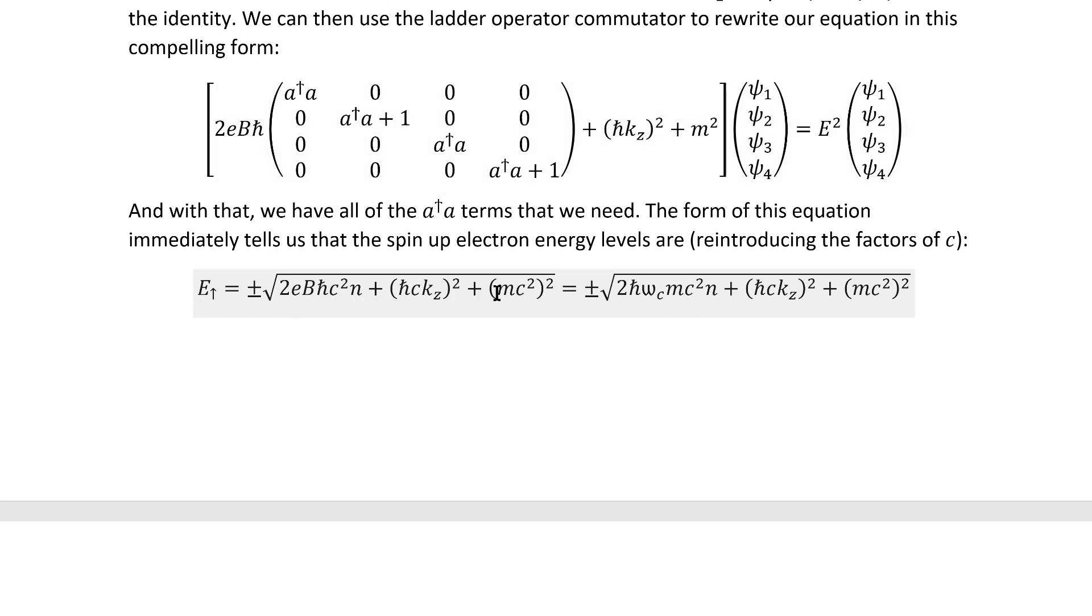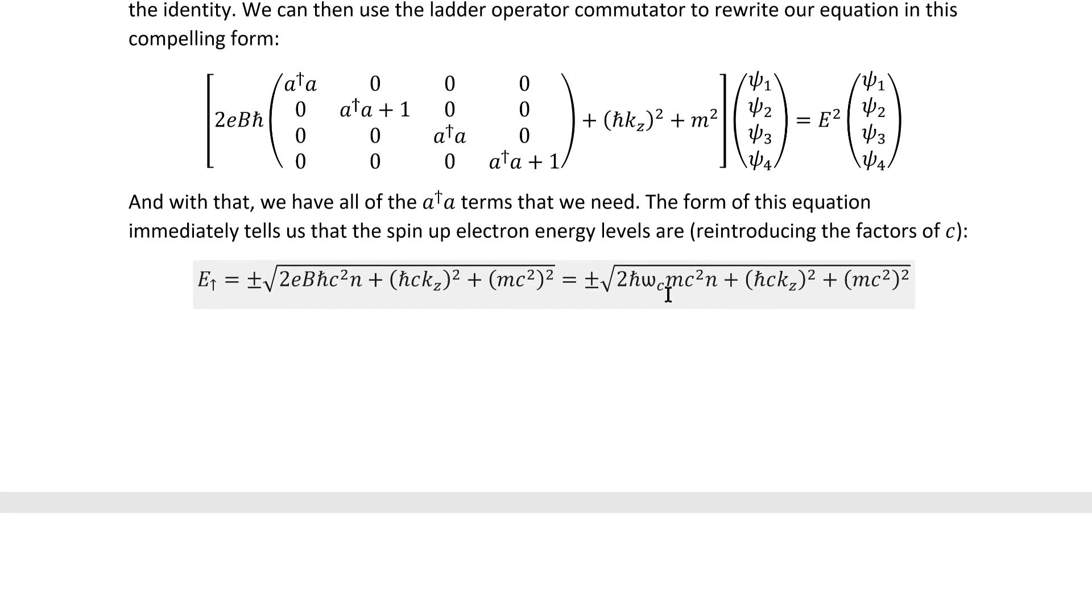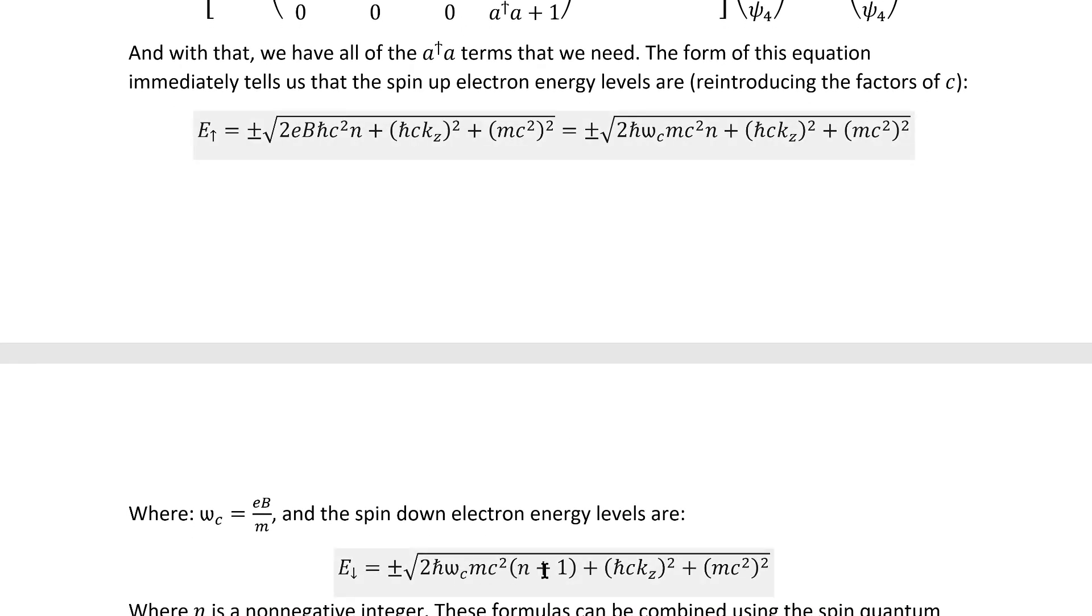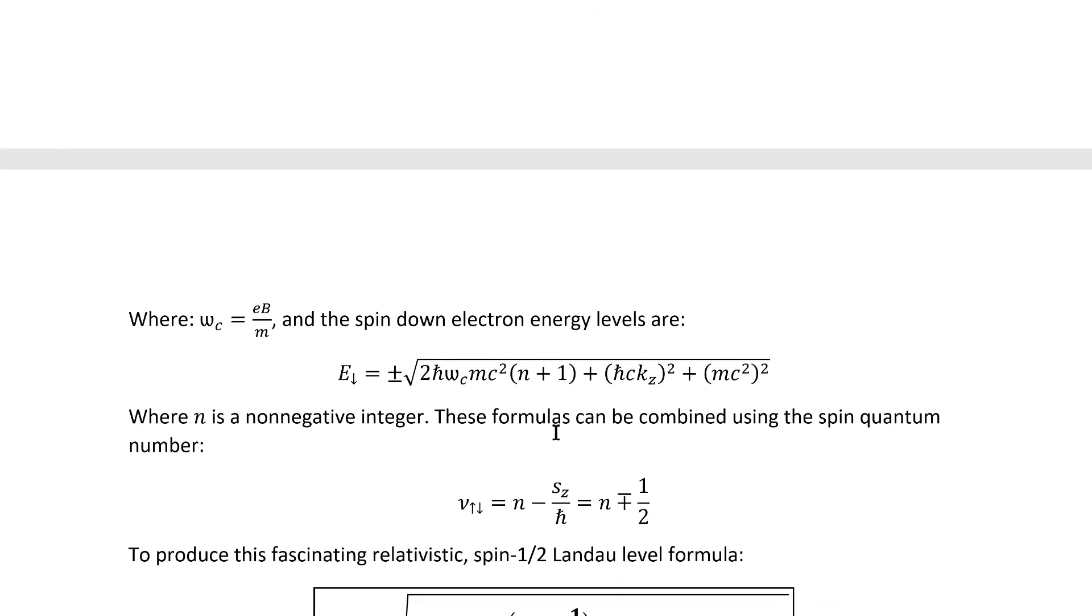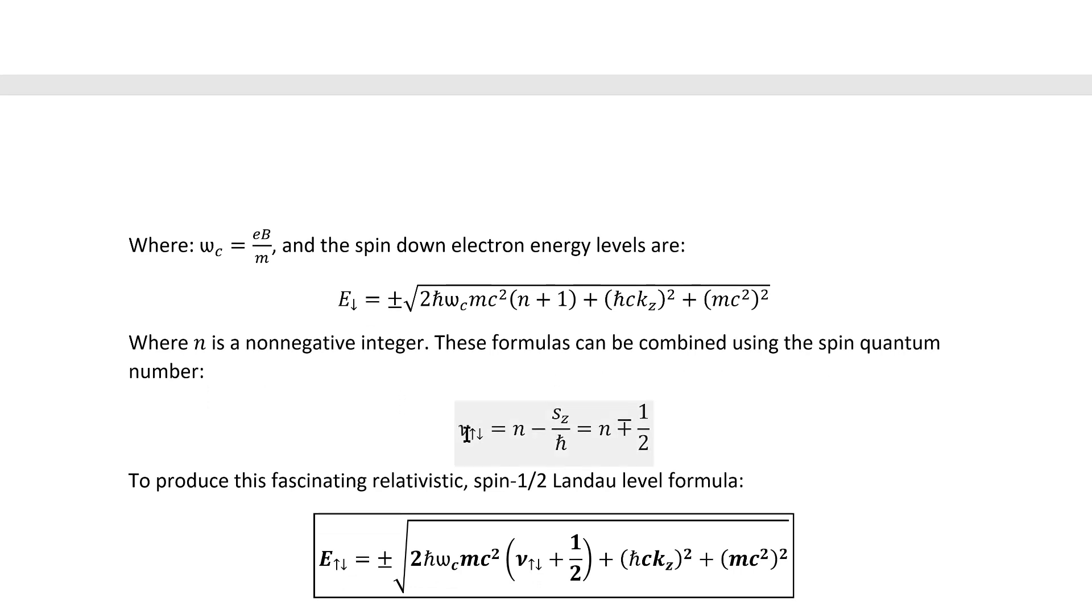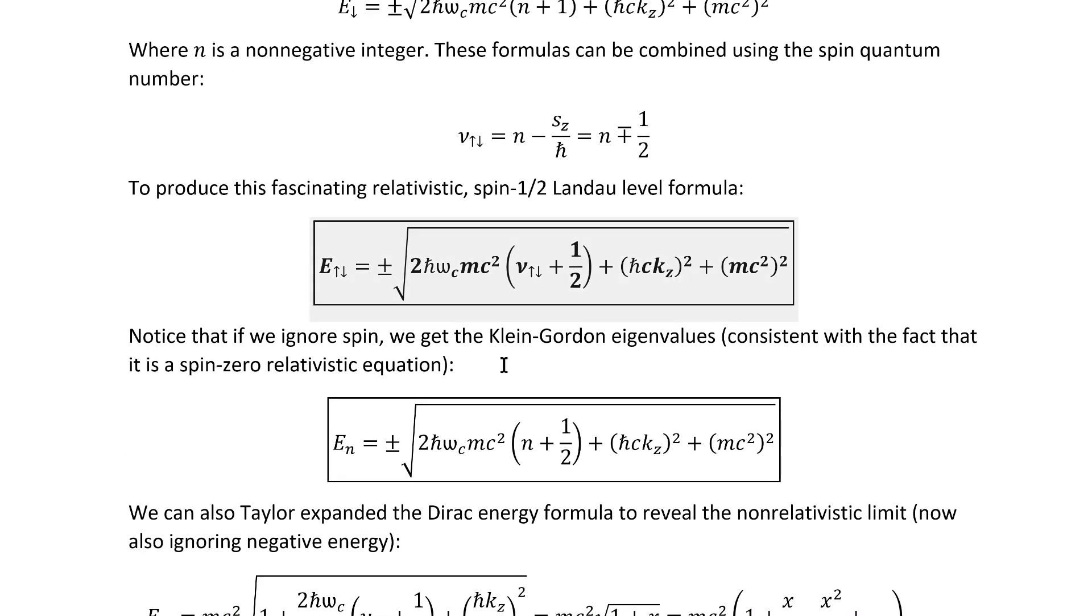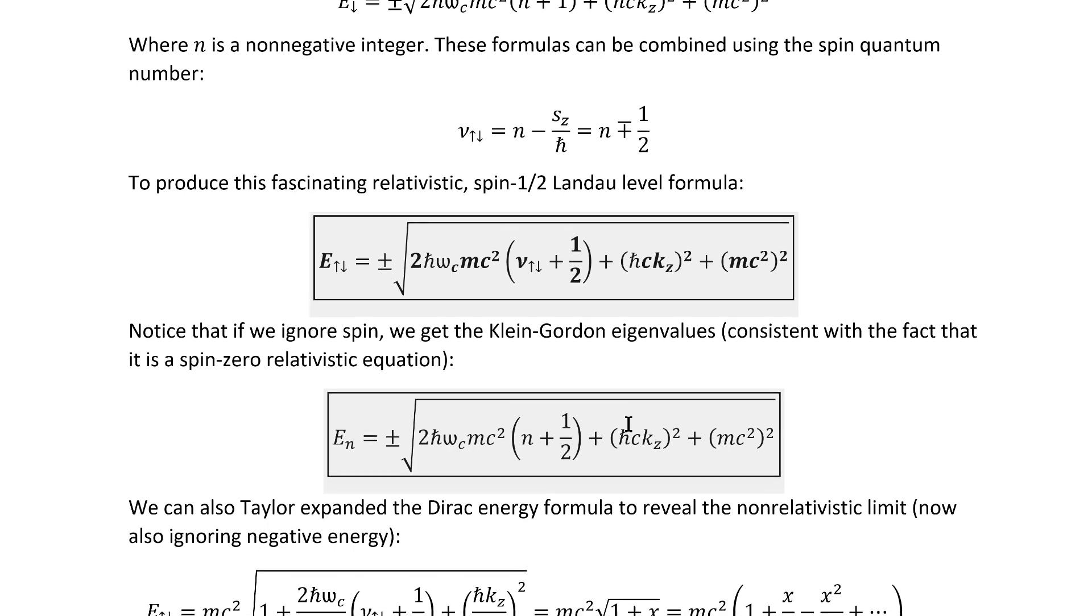Now for the spin up we just have these energy eigenvalues where I've reintroduced the C's here because there isn't much calculating left to do. I've also introduced the cyclotron frequency. It has the same formula as it did in the Schrodinger picture video. Now if we go down here to the spin down component we see that we do get different energy eigenvalues, there's this plus one there. But this change from n to n plus one means that we can actually compactly combine those energy eigenvalues by inventing this quantum number. And we get this very elegant result. Notice that when we ignore spin we just get this result which is the Klein-Gordon result. It's quite easy to sit down and do that problem. It's really just the same as the Schrodinger problem.